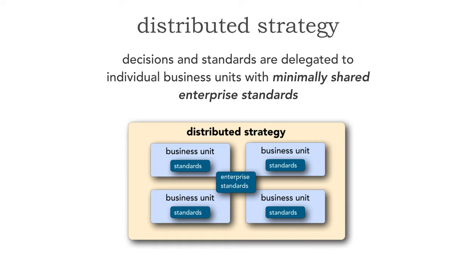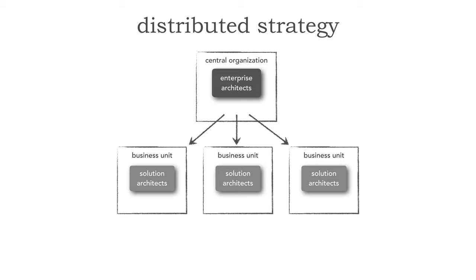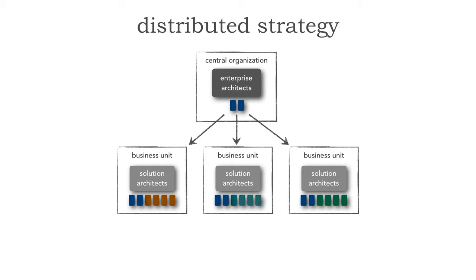The distributed strategy is where decisions and standards are delegated to the individual business units with minimally shared enterprise standards. Notice in the diagram that those enterprise standards — very minimal — are spread across those business units. The enterprise architects in the central organization define minimally shared standards. All business units, regardless of their autonomy, must adhere to those enterprise architecture standards. However, each business unit is free to define whatever standards they like, irrespective of other business units or even the central organization.